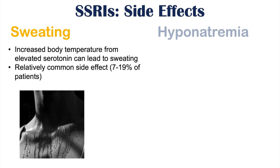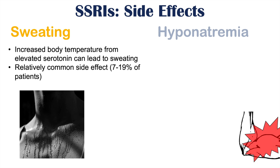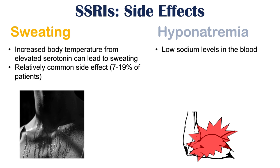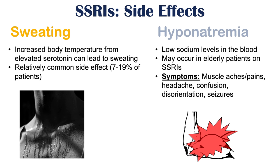Certain patient populations can also experience hyponatremia, which is low sodium levels in the blood. This is going to be more common in elderly patients on SSRIs. Symptoms of hyponatremia include muscle aches, pains, and headache in milder cases, and in more severe cases can lead to confusion, disorientation, and seizures.